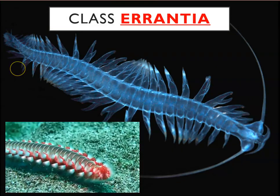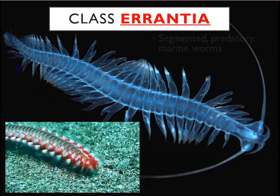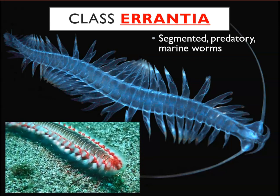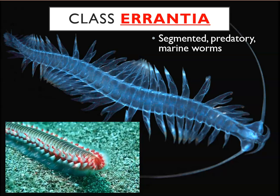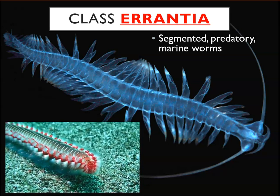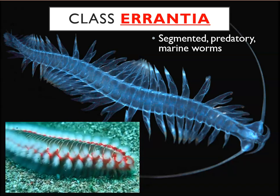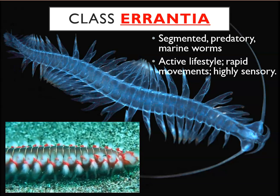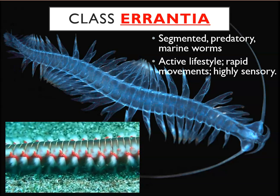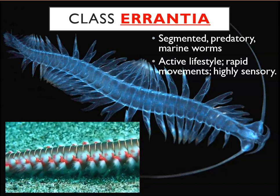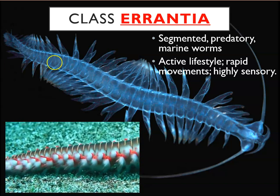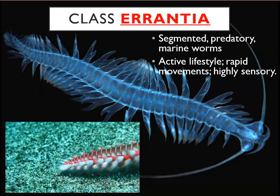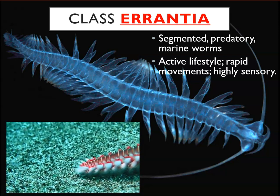There are three classes of annelids. The first is Errantia — all marine and segmented. Unlike the earthworms we commonly think of as slow detritivores, Errantia are predatory, preying on other organisms including fish. They are fast and active, coming out to snap and grab fish as they swim.